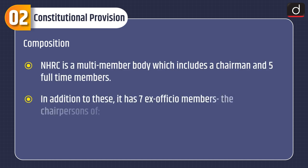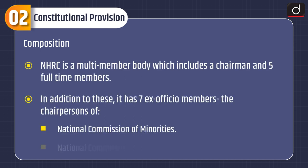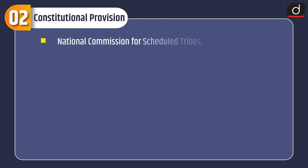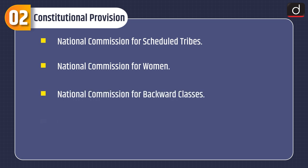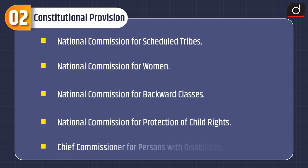Moving on to the constitutional provisions. First is composition. NHRC is a multi-member body which includes a chairman and five full-time members. In addition to these, it has seven ex-officio members: the chairpersons of National Commission of Minorities, National Commission for Scheduled Castes, National Commission for Scheduled Tribes, National Commission for Women, National Commission for Backward Classes, National Commission for Protection of Child Rights, and Chief Commissioner for Persons with Disabilities.